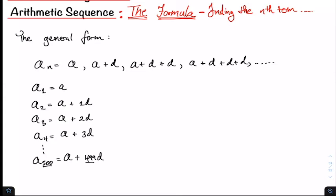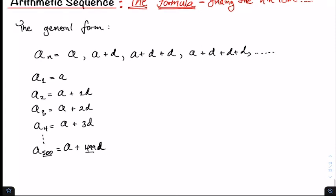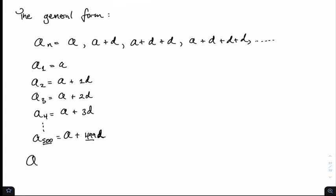So here we can write down the formula for the nth term and this will give us a, which is also a sub 1, plus n minus 1, whatever this number is n times the common difference.